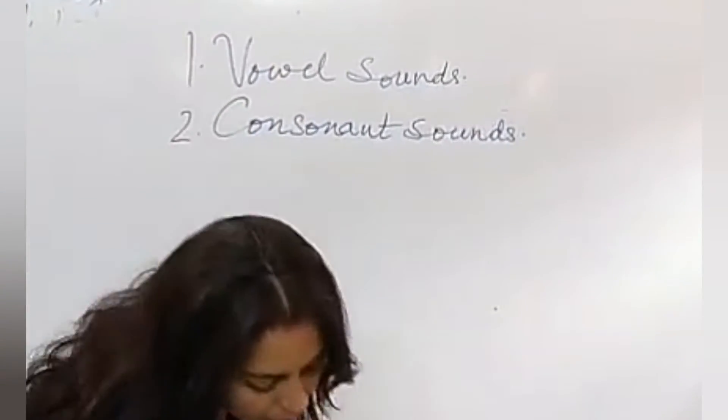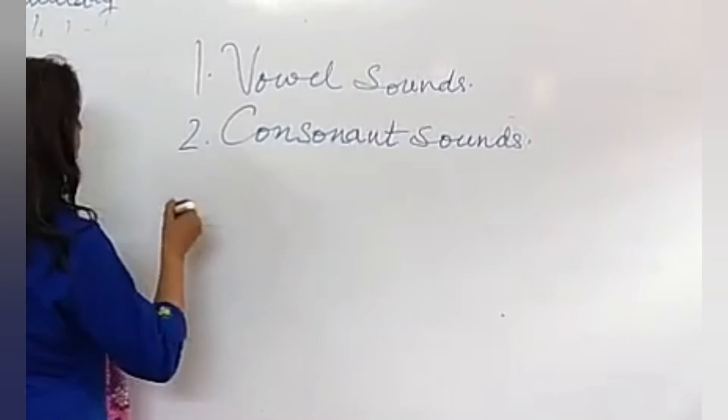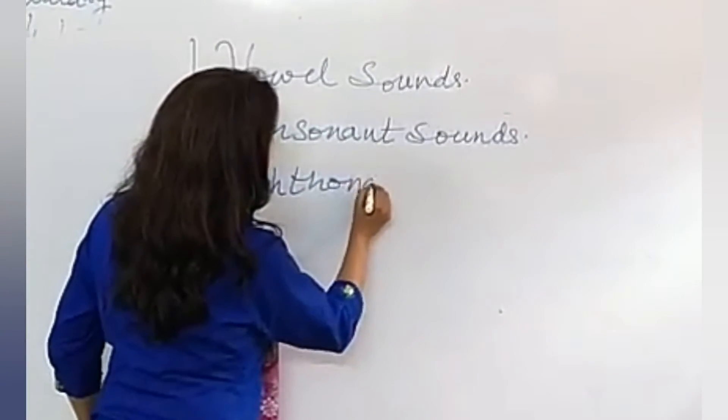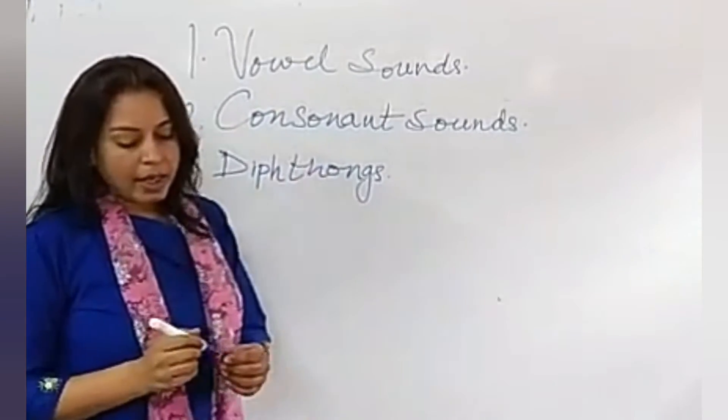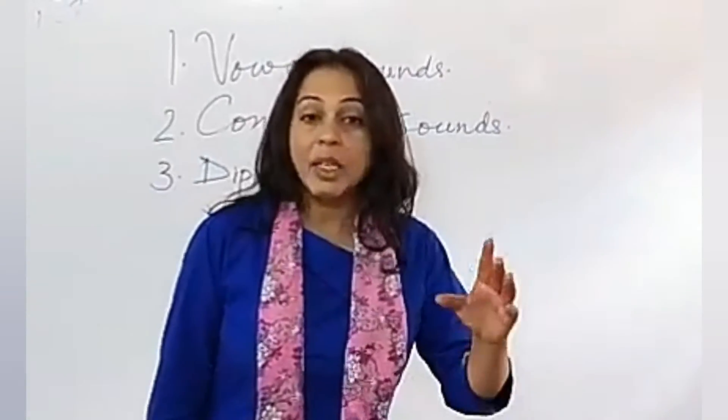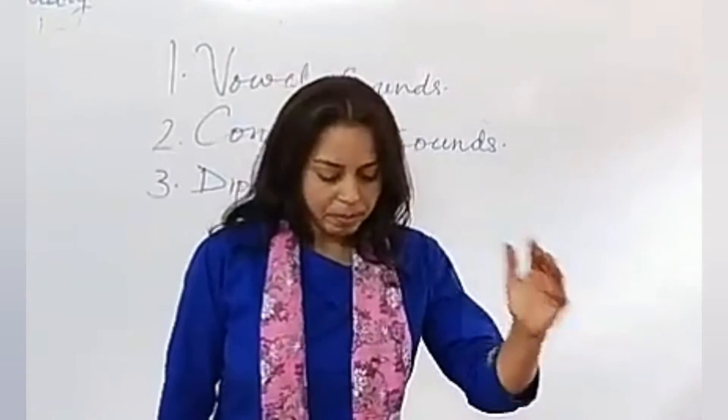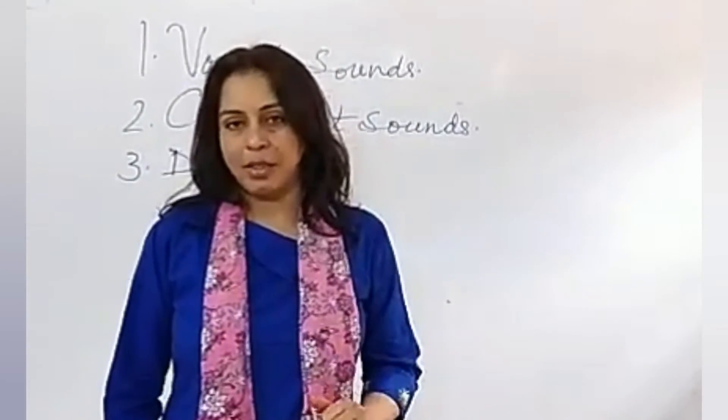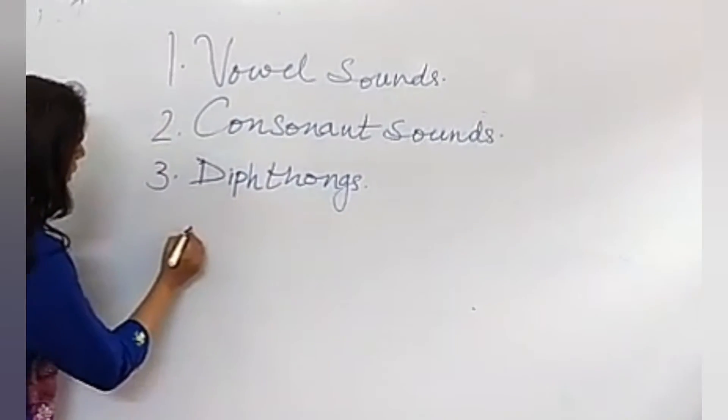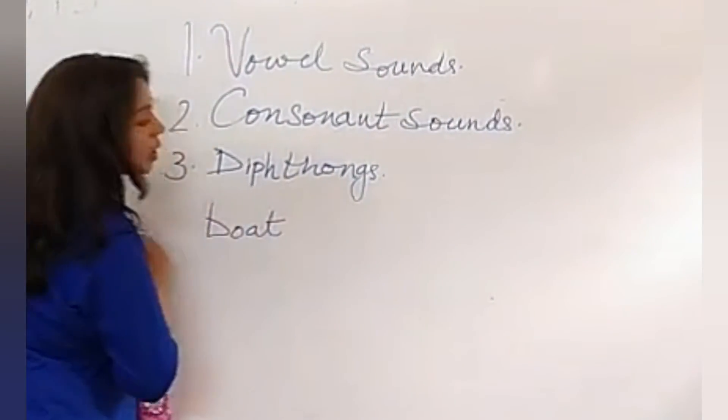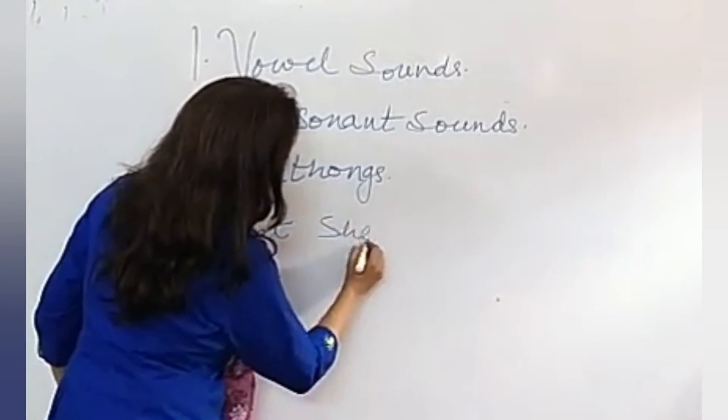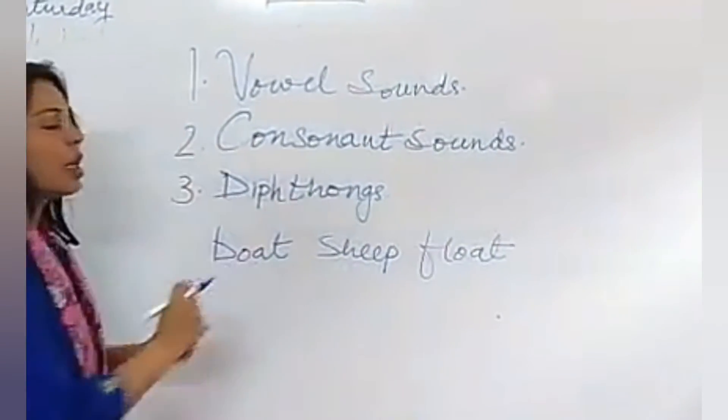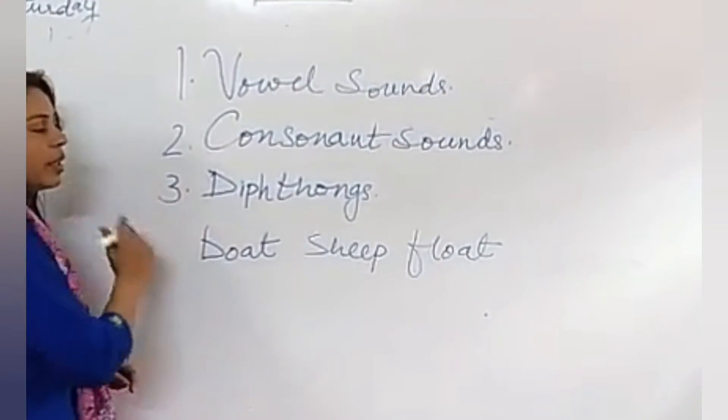Now, third one is diphthongs. That is new for you. Diphthongs is a vowel sound in which the tongue changes position to produce a sound of two vowels, like boat, she, float. It means two vowel sounds come together. That is called diphthongs.